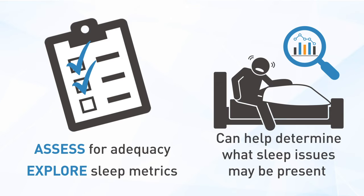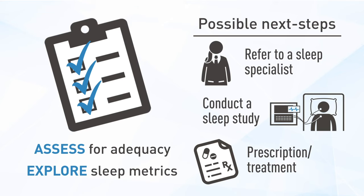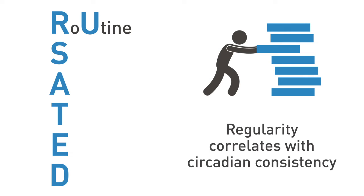While there are numerous measures available for teasing out sleep disorders and their associated symptoms, simply assessing for symptoms of sleep adequacy and quickly exploring simple sleep health metrics can help determine what sleep issues may be present, improving quality of life for patients and healthcare providers alike. R in RU SATED stands for routine — asking about the regularity of the 24-hour wake-sleep routine gives an idea of whether there is circadian consistency.